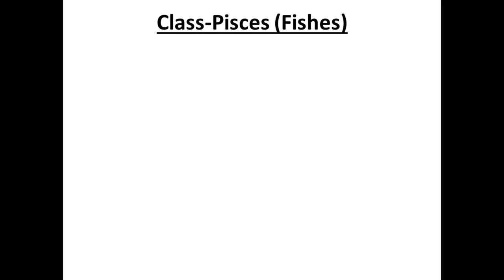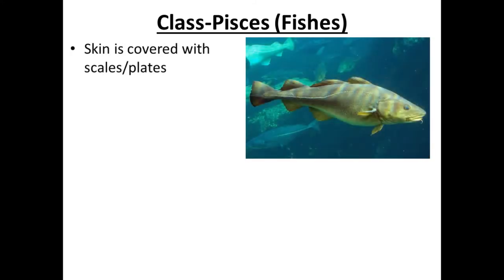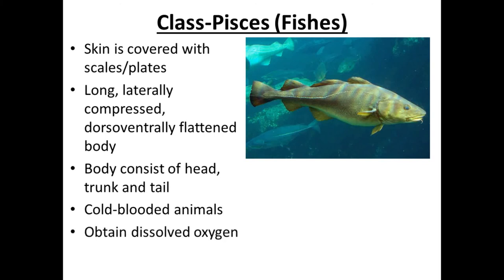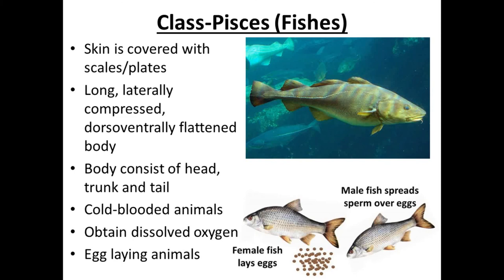Class Pisces includes all fishes. Their skin is covered with scales. They have a long body that is laterally compressed. The body consists of head, trunk, and tail. They are cold-blooded, aquatic animals that obtain dissolved oxygen from water through gills. They are egg-laying (oviparous), and since they lay eggs in water, fertilization is external.